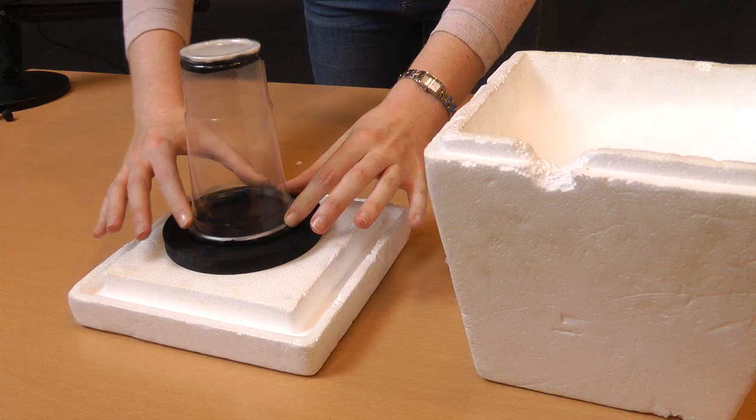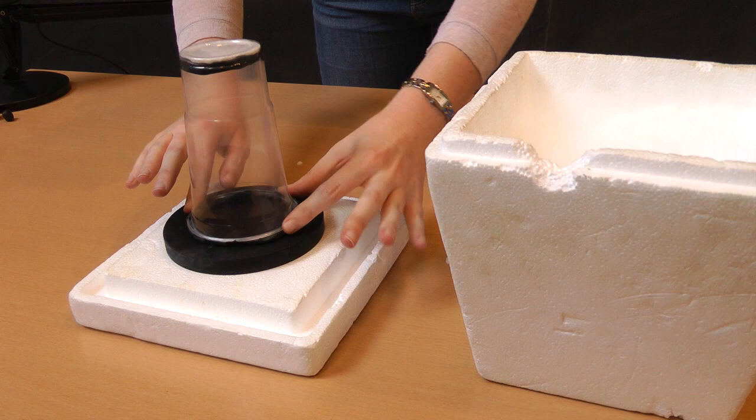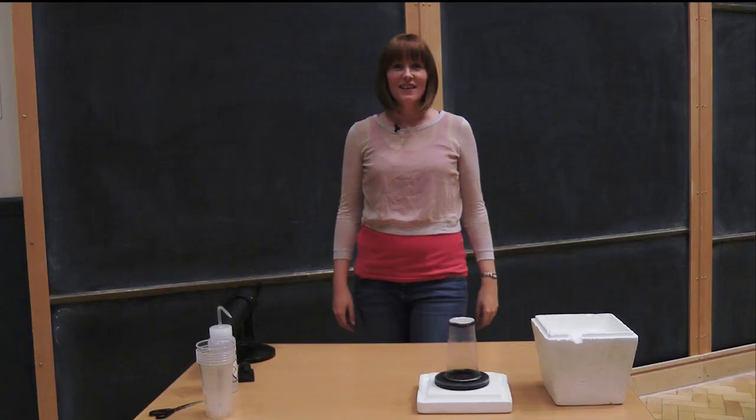All you need to do now is put the cloud chamber on and just press it down to create a bit of a seal using the plasticine that you've put on there. So now all we need to do is turn off the lights, turn on the lamp and try and point it from the side and then just watch closely. Oh there's one.